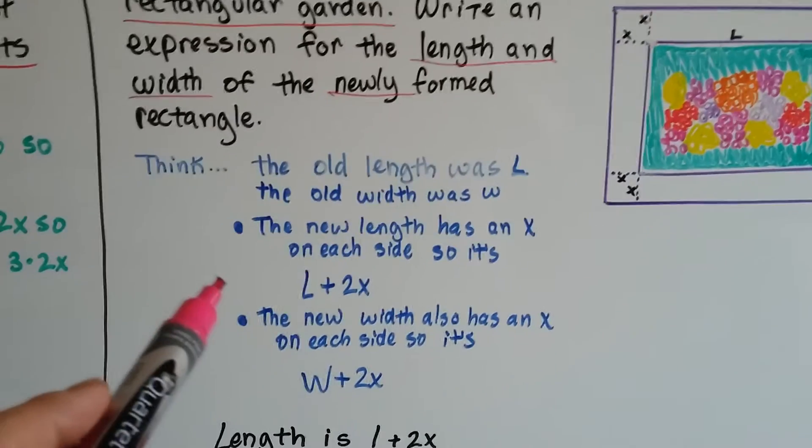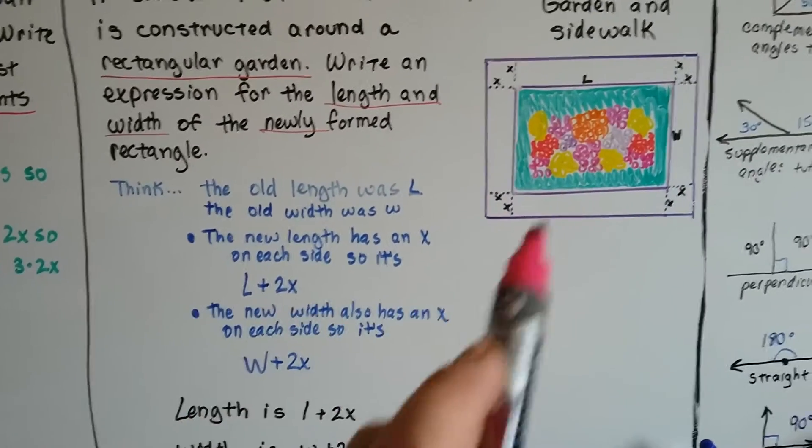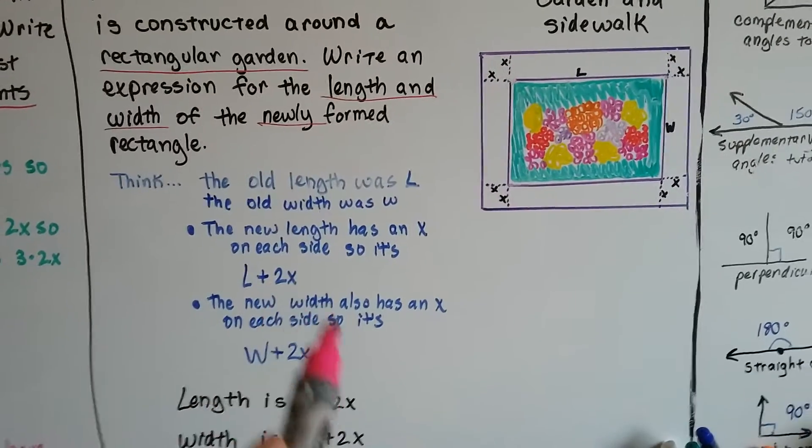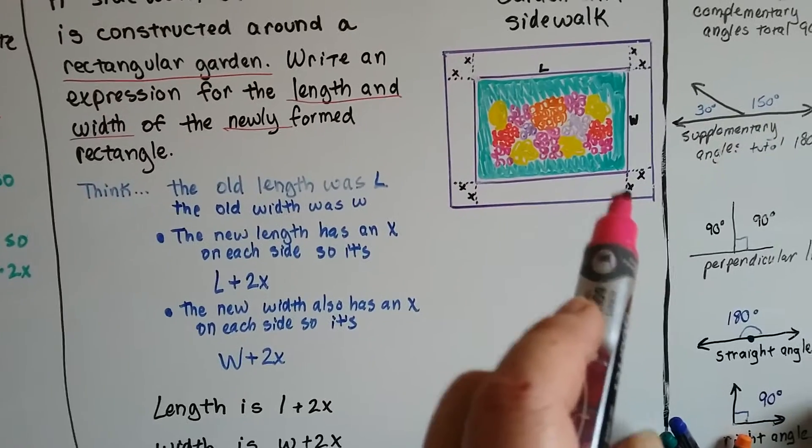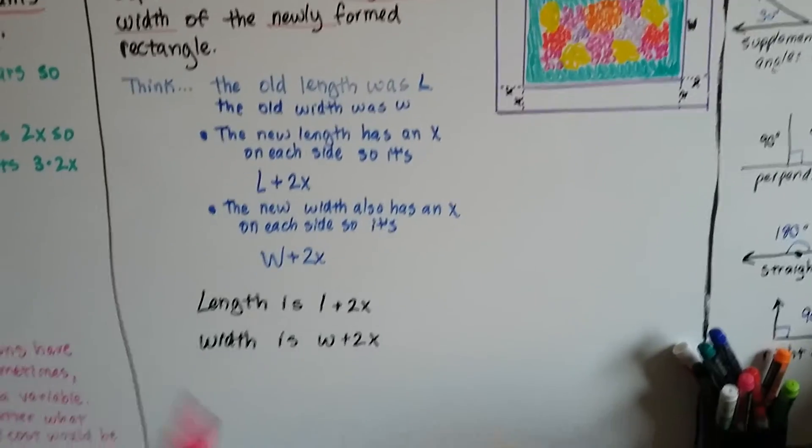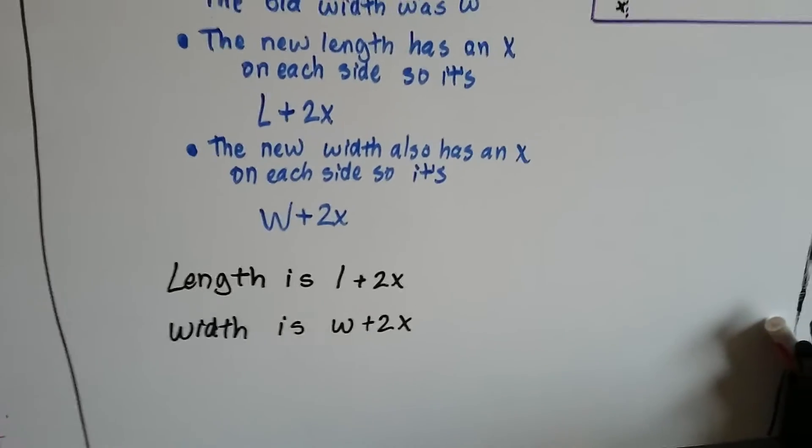So the old length was L, and the old width was W. The new length has an x on each side, an x here and an x here, so it's L plus 2x. The new width also has an x on each side, one here and one up here, so it's W plus 2x. So now we end up with the length is L plus 2x and the width is W plus 2x.